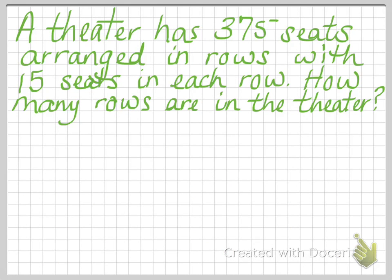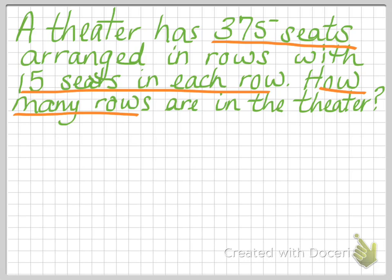Here is our problem to get us started. The theater has 375 seats arranged in rows with 15 seats in each row. How many rows are in the theater? So we know there's 375 seats arranged in rows, there are 15 seats in each row, but we don't know how many rows there are.